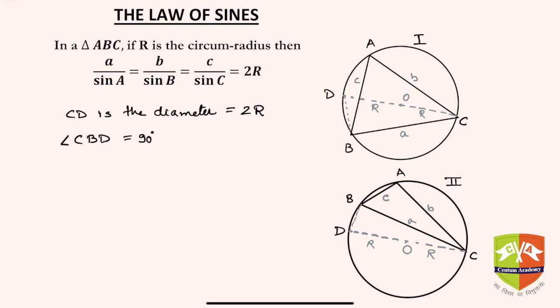Now in triangle CBD, I can say sine of D will be opposite by hypotenuse, so a upon 2R.